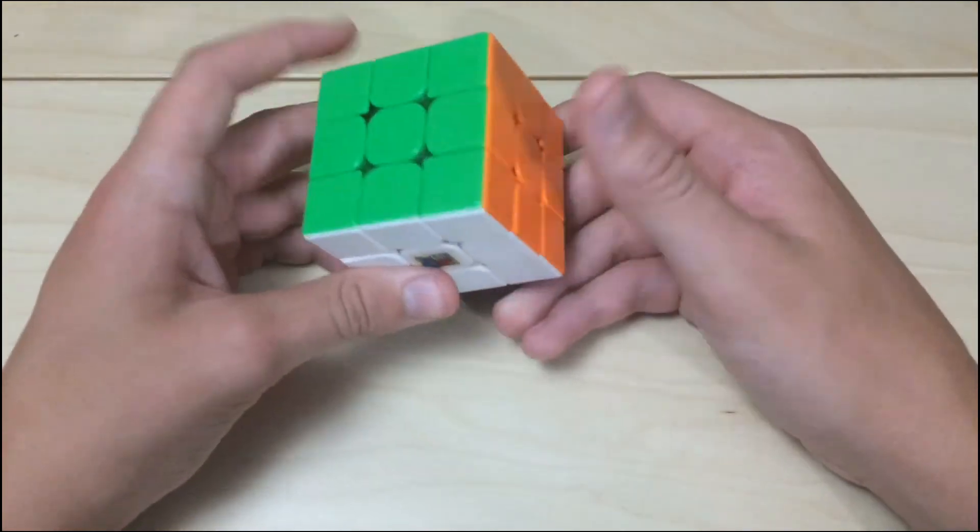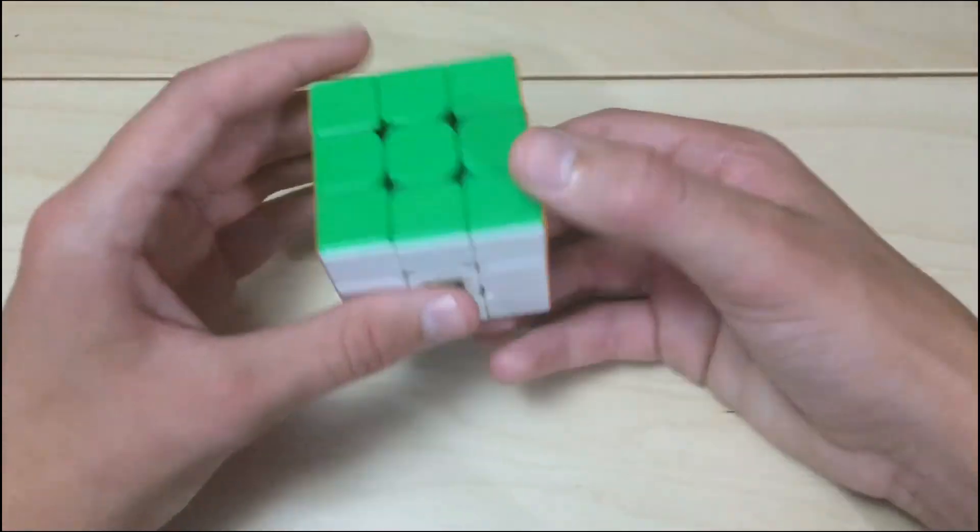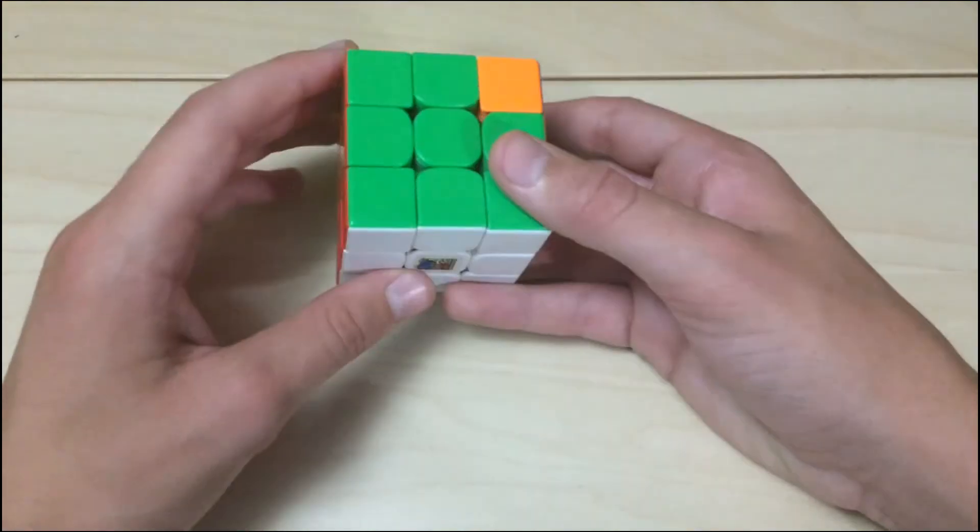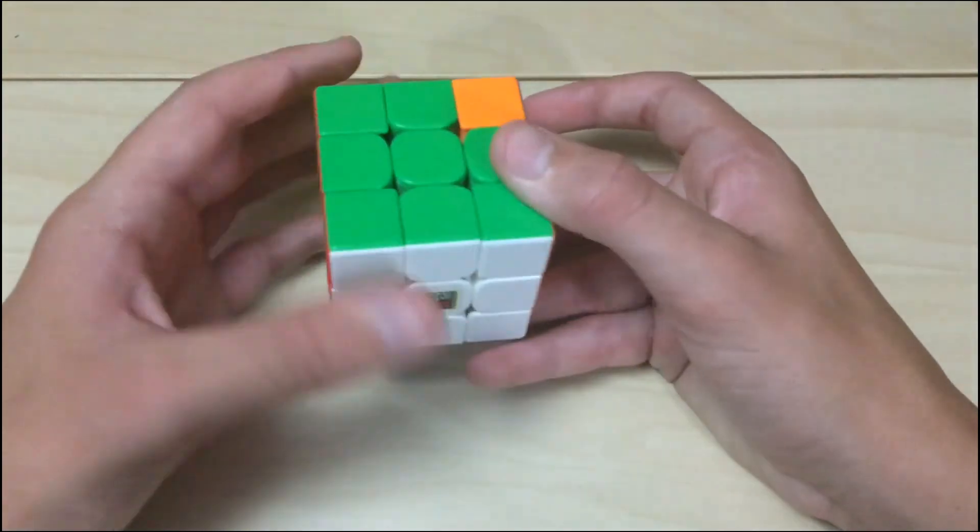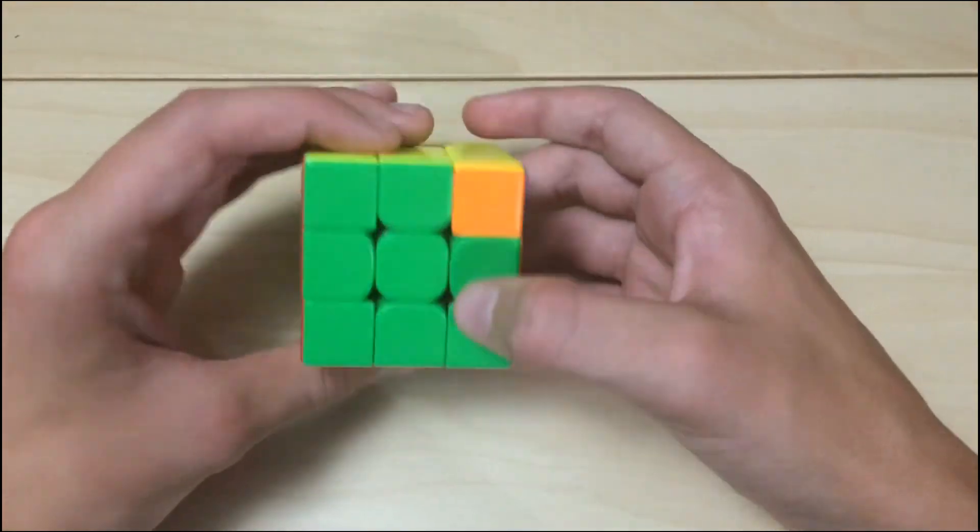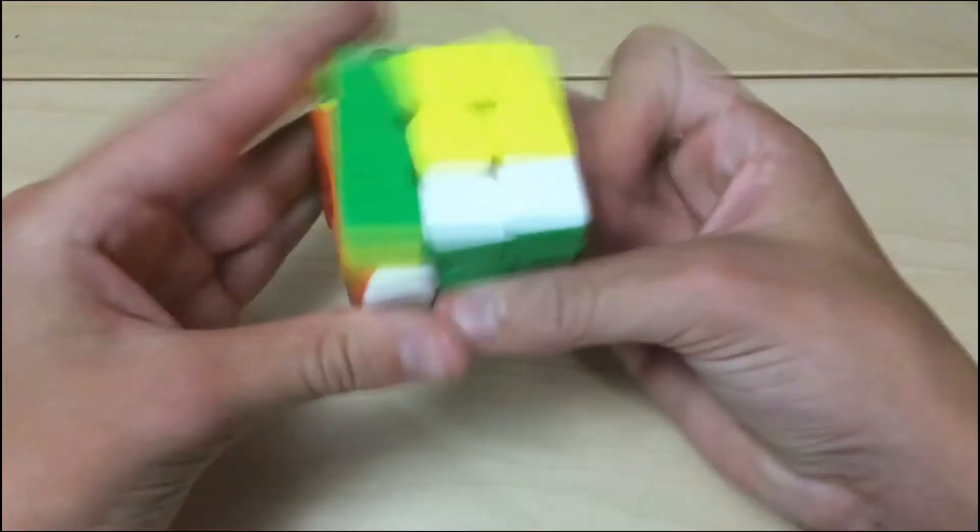So here's a quick example of how I execute my J perm, which is really fast. It looks kind of scary, because it has a rotation at the beginning, but it's really just a re-grip, putting your left thumb to the bottom. And it has some wide moves, but it's very easy.